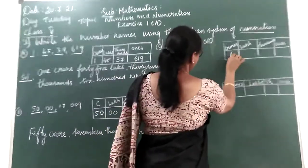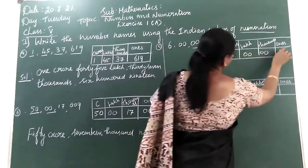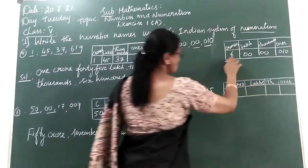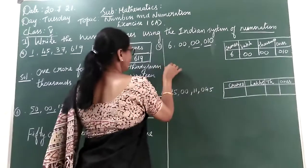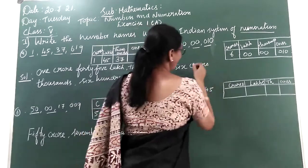See now enter the digit according to the period. So 6, 0, 0, 0, 0, 0, then 0, 1, 0. So 6 crores 10. So write that. In number names: 6 crore 10. That's how they read.